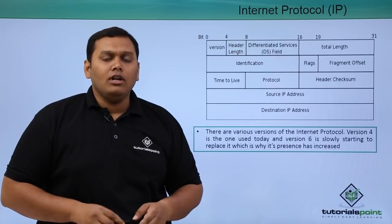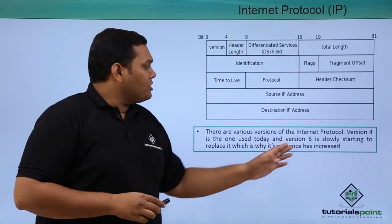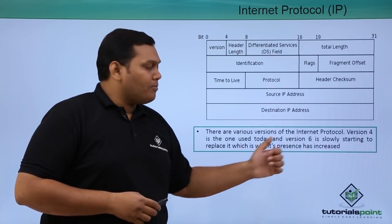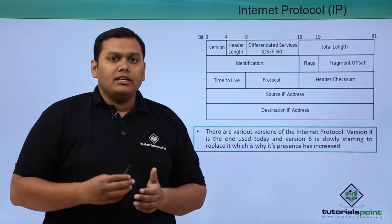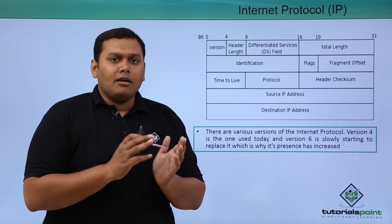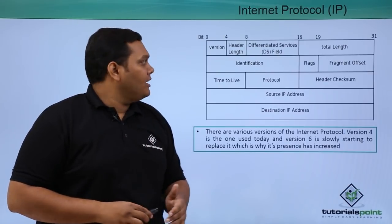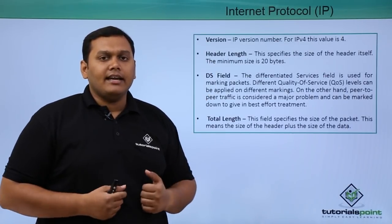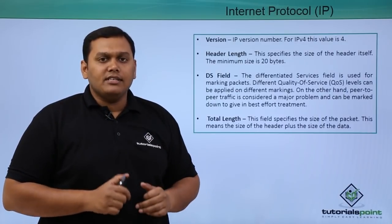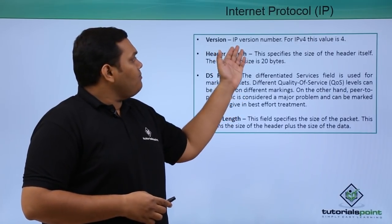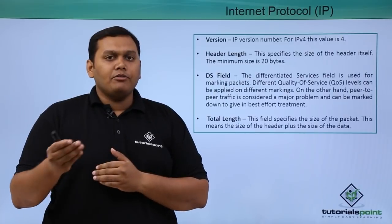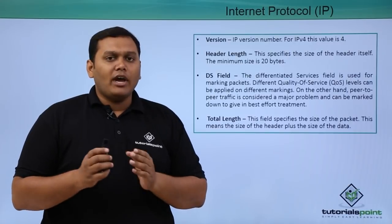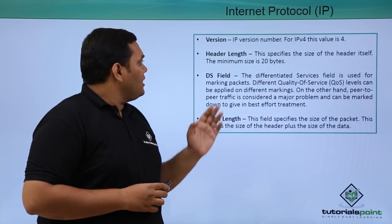There are various versions of internet protocol, but presently version 4 is being used today, and version 6 is gaining importance and may come into full-fledged use in coming years. The version field in the IP header indicates which IP version is in use — currently IPv4, with a value of 4.